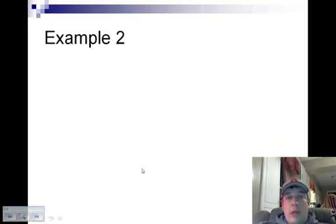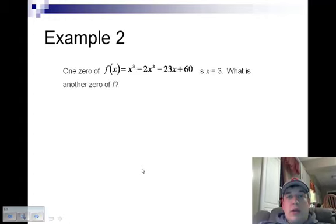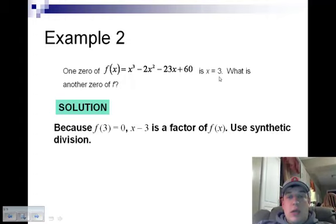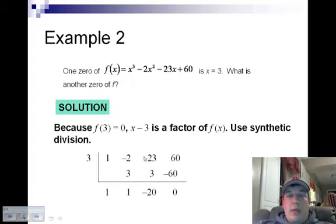Our other example is when I'm given a 0. Here I have a polynomial x cubed minus 2x squared minus 23x plus 60, and I'm being told that x equals 3 is a 0. Well if x equals 3 is a 0, that means that x minus 3 is a factor. Because f of 3 is equal to 0, x minus 3 is a factor. And I can use synthetic division to take our original polynomial and divide it by x minus 3.